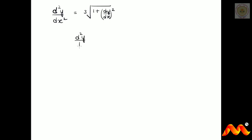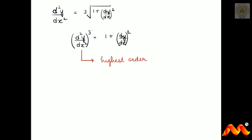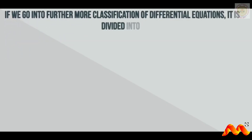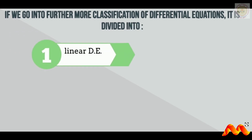Second example: d²y/dx² = ∛(1 + (dy/dx)²). To make this free from radicals, cube both sides: (d²y/dx²)³ = 1 + (dy/dx)². Therefore the order is 2 and the degree is 3. We can further classify differential equations into linear and nonlinear types.